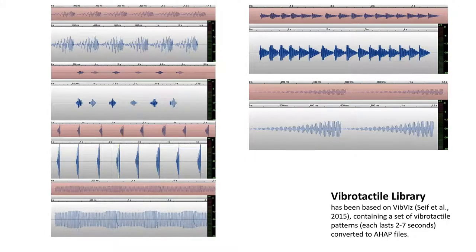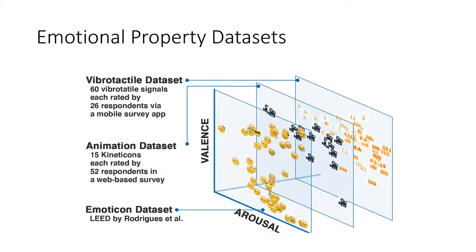The vibrotactile library is from WebViz, which contains a set of vibrotactile patterns. We filtered out vibrations based on their harmony and relevancy with emoticon data, and finally selected 60 vibrations. The emoticon dataset is from LEED — the Lisbon Emoji and Emoticon Database — and we selected the emojis that appear in the iOS system.